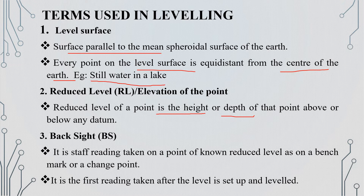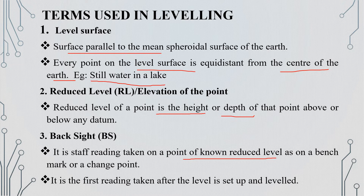Next is backsight. Backsight is a staff reading taken on a point of known reduced level, such as a benchmark or change point. The staff reading taken on a known reduced level is called backsight. It is the first reading taken after setting up the instrument.